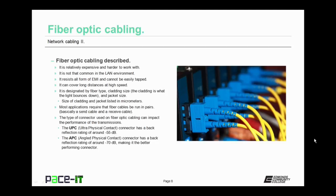Fiber optic cabling is designated by fiber type, cladding size — the cladding is what the light bounces down — and jacket size, that outer jacket that covers the cable. The size of the cladding and jacket are listed in micrometers. Most applications of fiber optic cabling require that the cables be run in pairs: one cable to send transmissions, one cable to receive transmissions. The type of connector used on fiber optic cabling can impact the performance of the transmission.